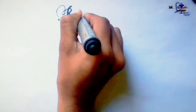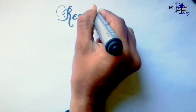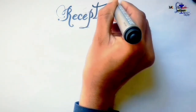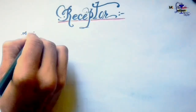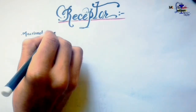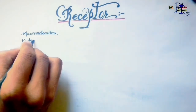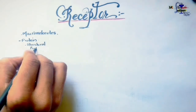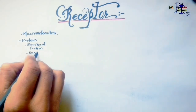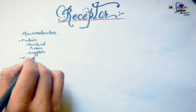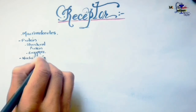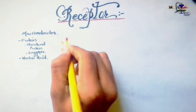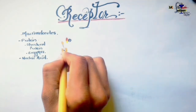What are receptors? Receptors are macromolecules to which drugs bind and show their pharmacological effect. These macromolecules are mostly protein in nature — like structural proteins or enzymes — or sometimes nucleic acids also act as receptors, to which drugs and other endogenous substances like neurotransmitters and hormones bind and bring about their action.